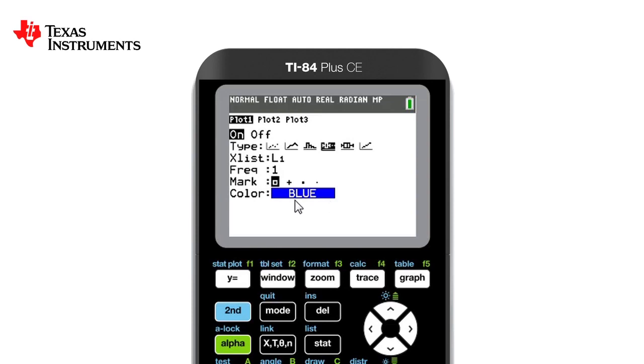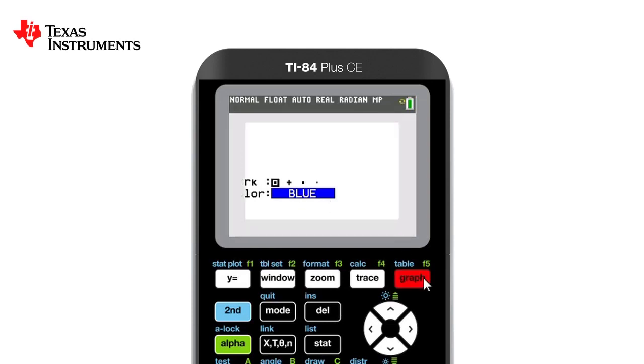To get this, we simply press graph, and what a beautiful graph it is too. We can see that it's on the standard minus 10 to 10 axes. To adjust this, there's two main ways. One is to go into window and manually change it, but a quicker, slightly lazier way is to go into zoom and press number nine, zoom stat.